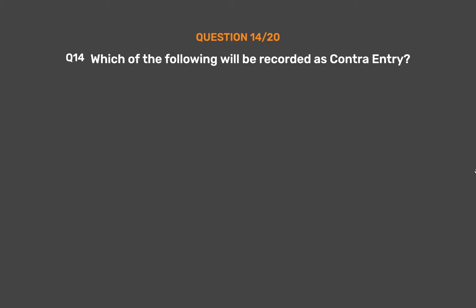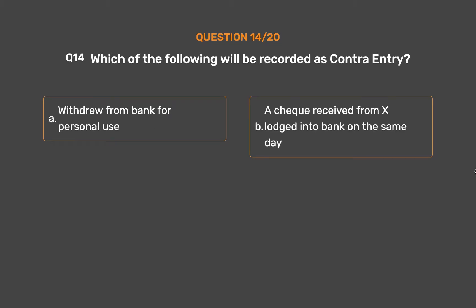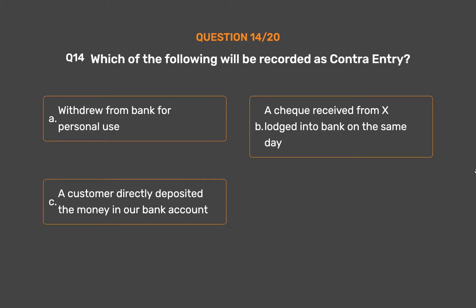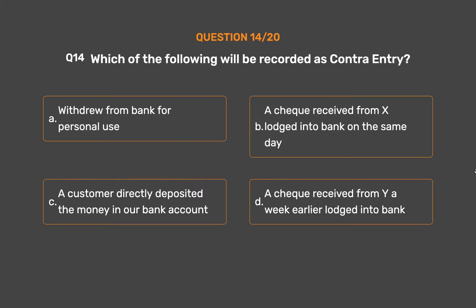Question number fourteen: which of the following will be recorded as a contra-entry? Option A: withdrew from bank for personal use. Option B: a cheque received from X lodged into bank on the same day. Option C: a customer directly deposited money in our bank account. Option D: a cheque received from Y a week earlier lodged into bank.